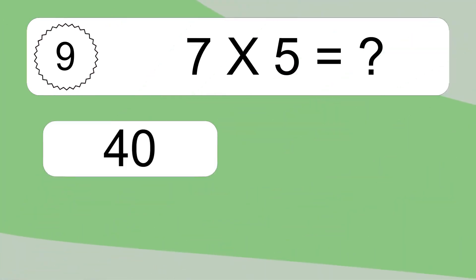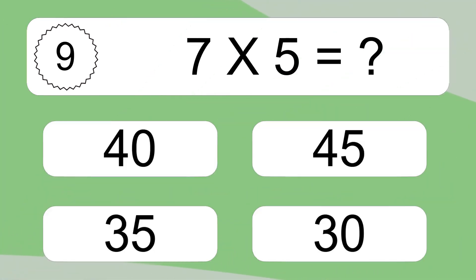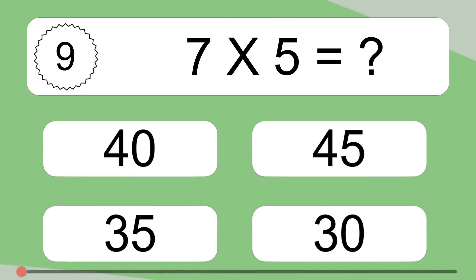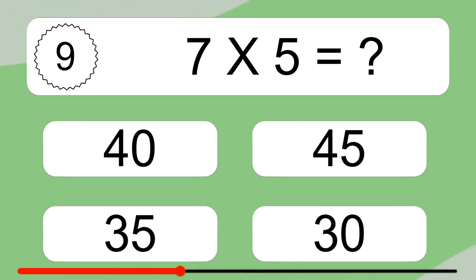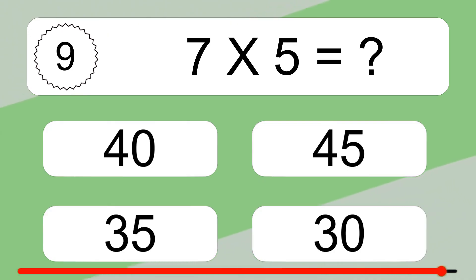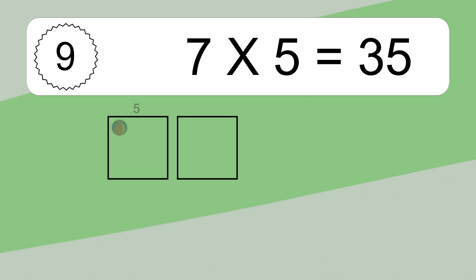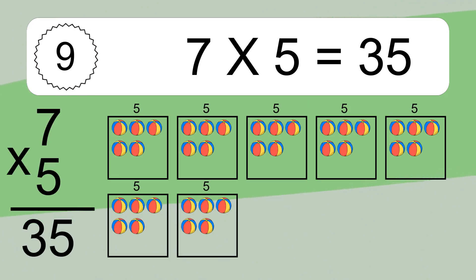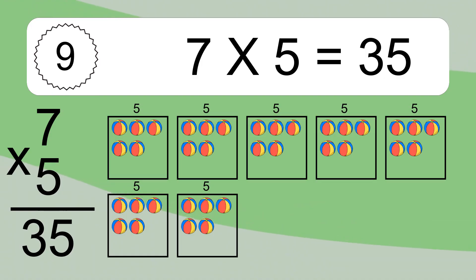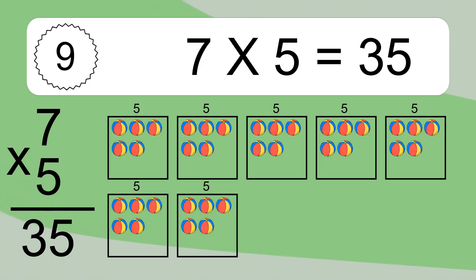7 times 5 equals what? We have 5 boxes, and each box has 5 colorful balls inside. If you count all the balls in all the boxes together, you will have 7 times 5 balls. This equals 35 balls.